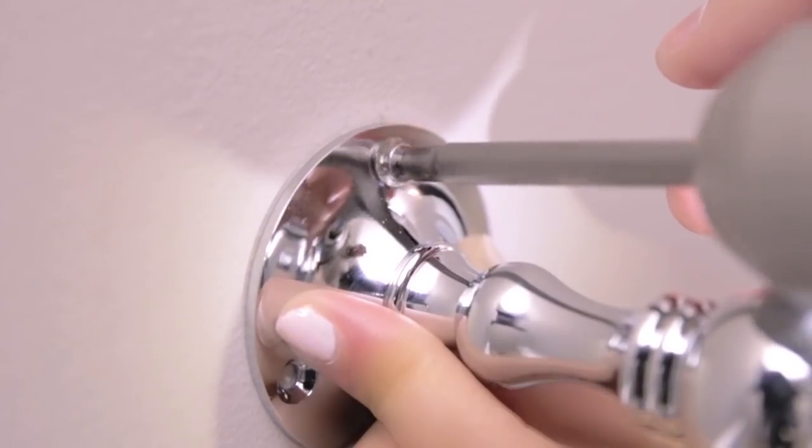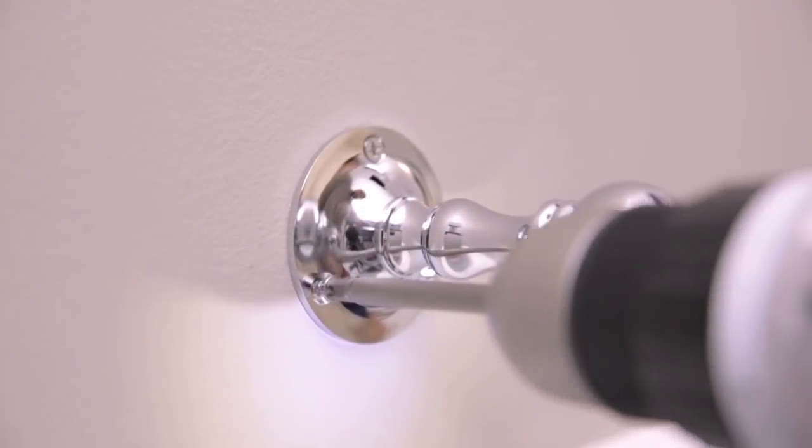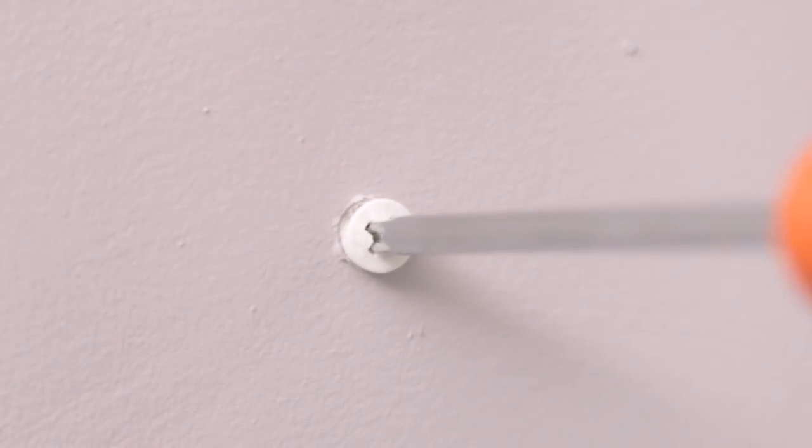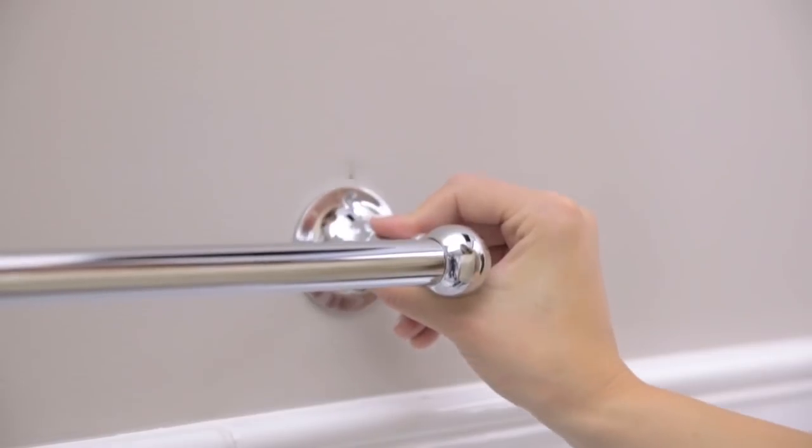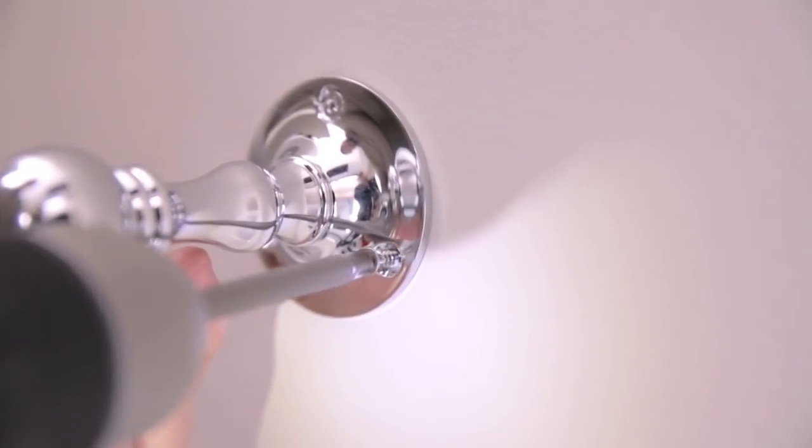Next, mount one bracket to the wall using the included screws. If using drywall anchors first, be sure they are flush to the wall. Place the bar in the mounting brackets and attach the remaining bracket to the wall.